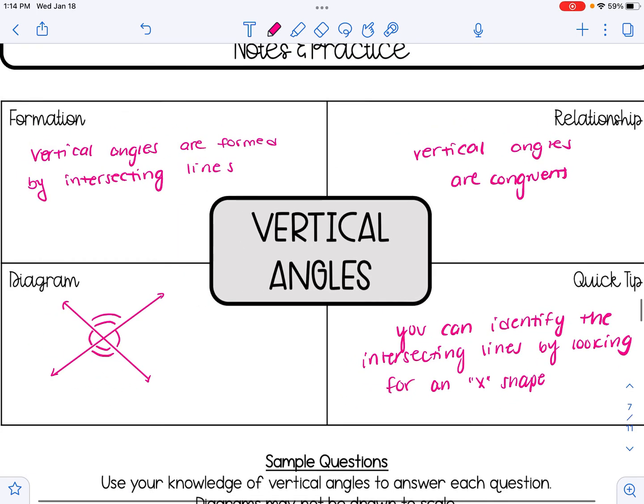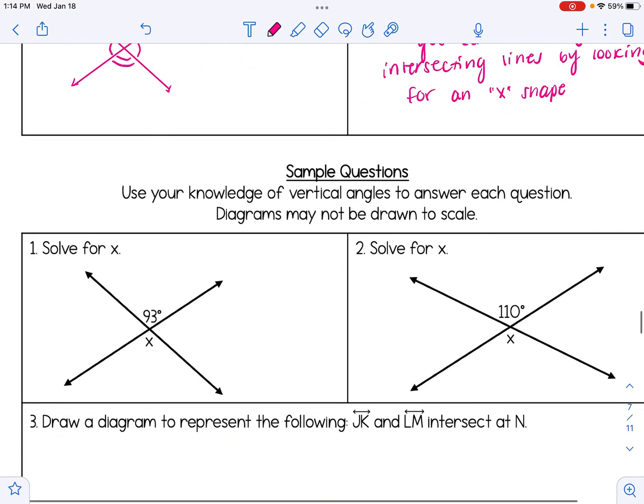If I look at the diagram over to the left, when I drew the two intersecting lines, it resembles the letter X. Now that we know how vertical angles are formed and their relationship to one another, let's take a look at some sample questions.